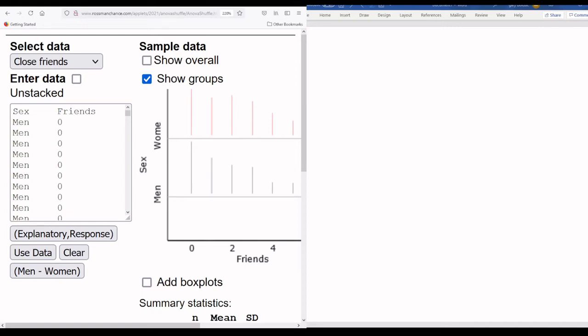All right, so we have the Rossman Chance applet open here. We're going to go a little bit deeper into an example and use some of the data from the applet. We are using the close friends data.